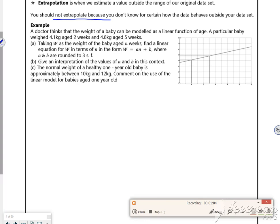So it says the doctor thinks that the weight of the baby can be modeled as a linear function. So we've got a baby weighs 4.1 at two weeks and 4.8 at five weeks. Taking W as the weight to find the equation.